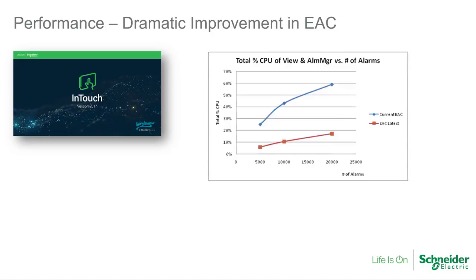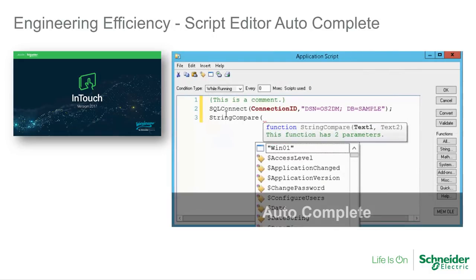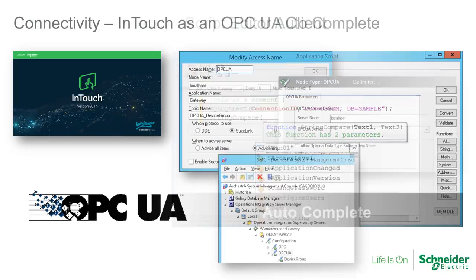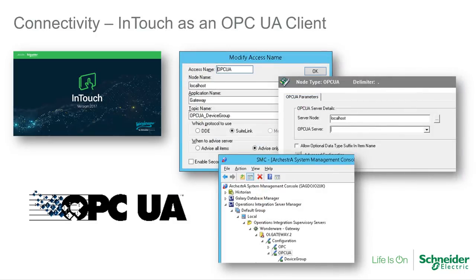We've also made dramatic improvements in the alarming client's performance, and added autocomplete to the script editor. And finally, InTouch 2017 is now able to act as an OPC UA client, further expanding its reach into the vast amounts of data within our users' production environments.